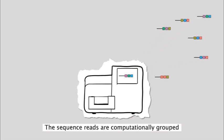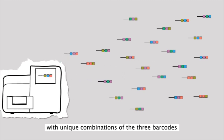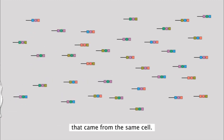The sequence reads are computationally grouped with unique combinations of the three barcodes, identifying groups of reads that came from the same cell.